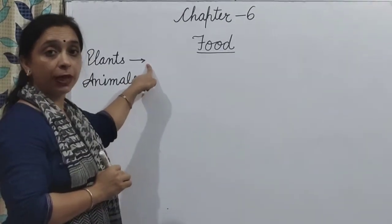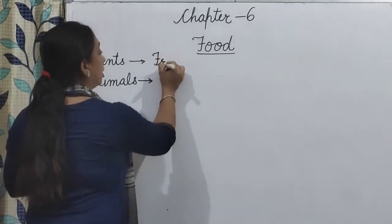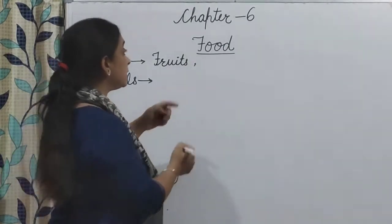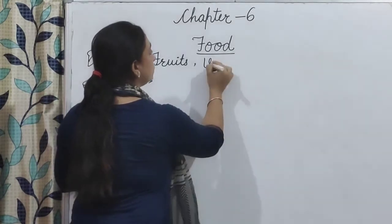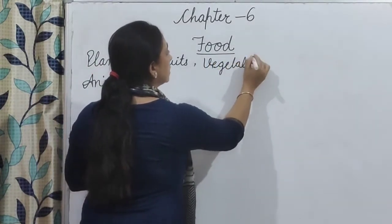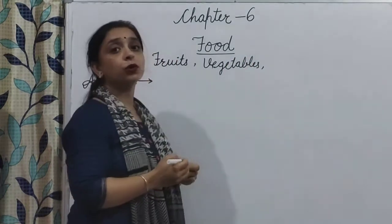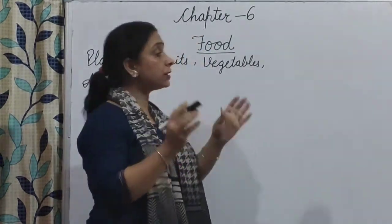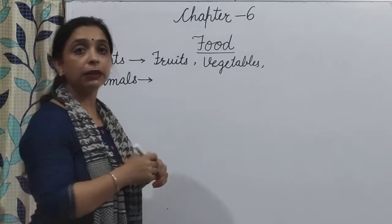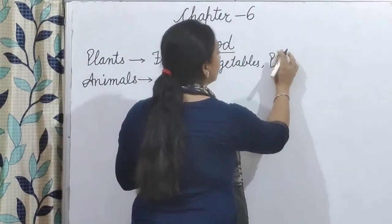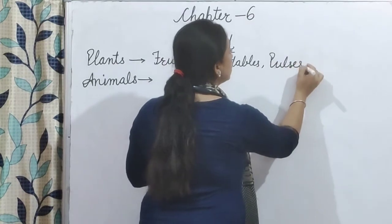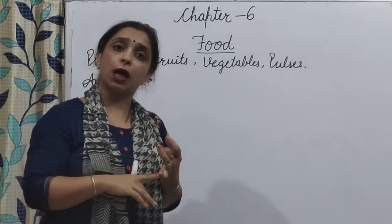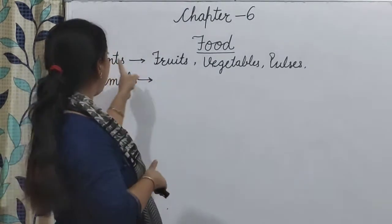Plant से कौन-कौन से food मिलते हैं? Like fruits — apple, banana, orange, pineapple, guava. Vegetables like potato, peas, ginger, tomato — बहुत सारी vegetables हमें plant से मिलती है। And pulses — pulses means दालें, like moong, राजमा, चना — वो सारी दालें जो आप खाते हैं, वो सब हमें plant से मिलती हैं।